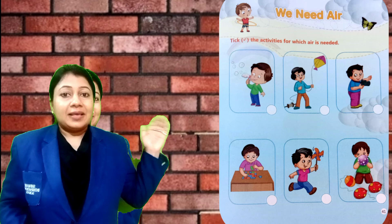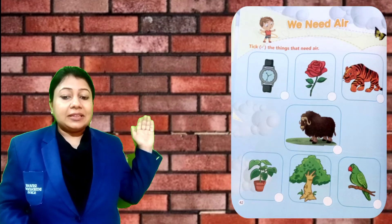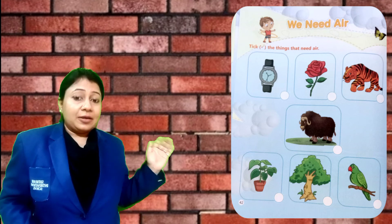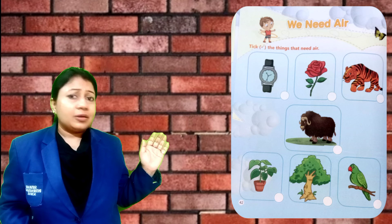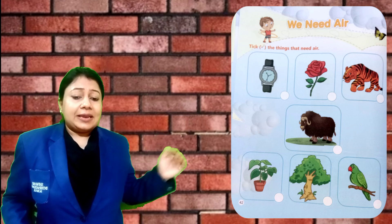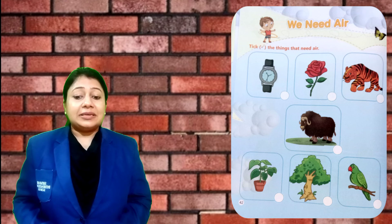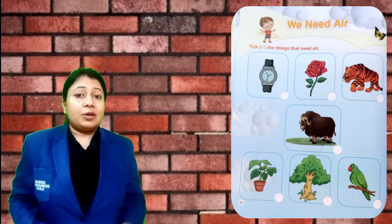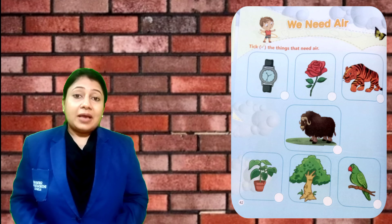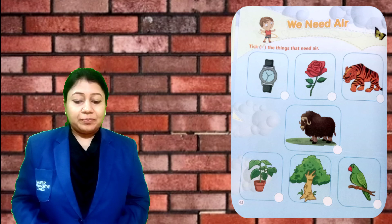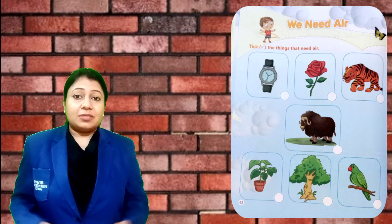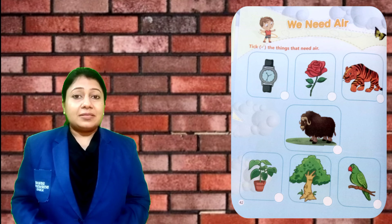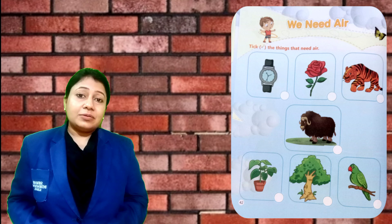Now move to next page. We need air. The activity: tick the things that need air. First picture — no, that does not need air. Next — rose. Yes, rose needs air. Next — tiger. Tiger also needs air. Next — yak. Yak also needs air. Plants also need air. Tree also needs air. Parrot — parrot is an animal and a bird. Parrot also needs air.